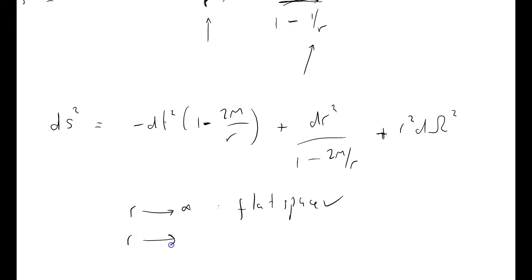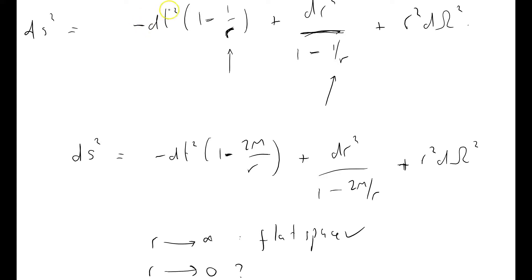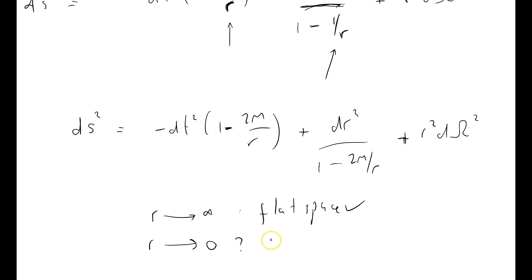What happens when r approaches zero? Well, when r approaches zero, we've got bad things going on because we've got infinity, so we've got a 1 over r term in here. We've got a 1 over r term here, so we've got infinity. We call this the singularity, and I'll have a lot more to say about this later on.